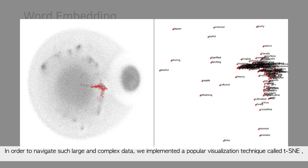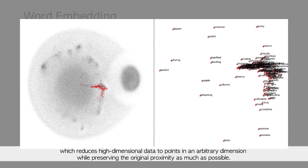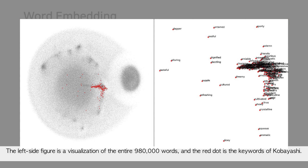In order to navigate such large and complex data, we applied a popular visualization technique called t-SNE, which reduces high-dimensional data to points in an arbitrary dimension while preserving the original proximity as much as possible. The left figure is a visualization of the entire 980,000 words, and the red dot marks the keywords of Kobayashi.